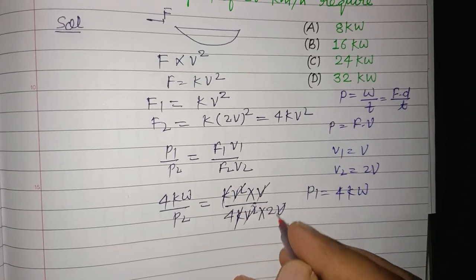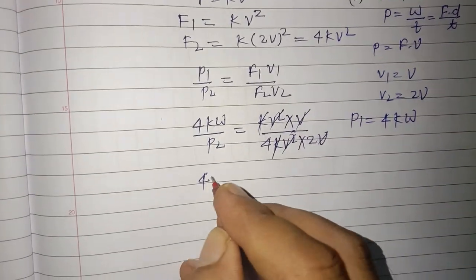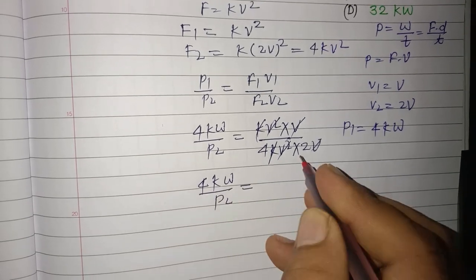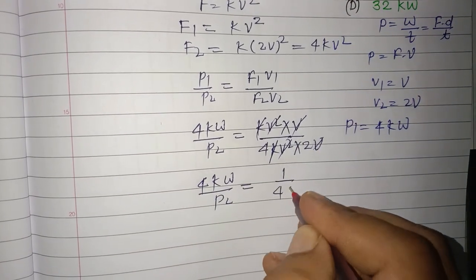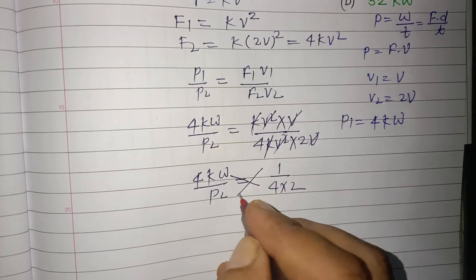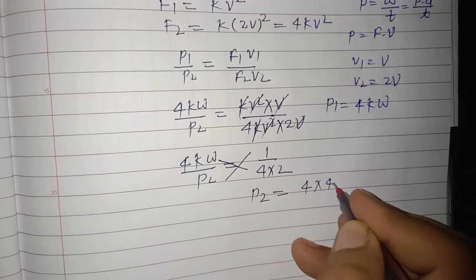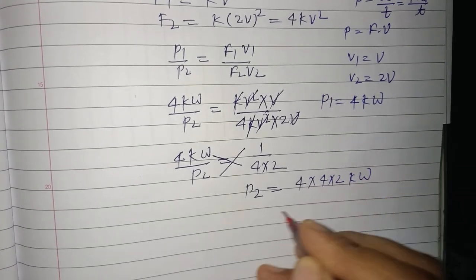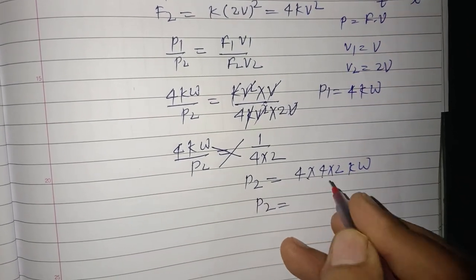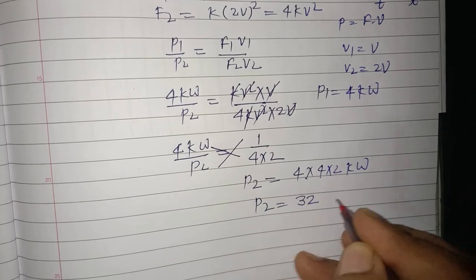Canceling terms, we get 4 kilowatts upon P2 equals 1 upon 4 times 2. On cross multiplication, we get P2 equals 4 times 4 times 2, which equals 32 kilowatts.